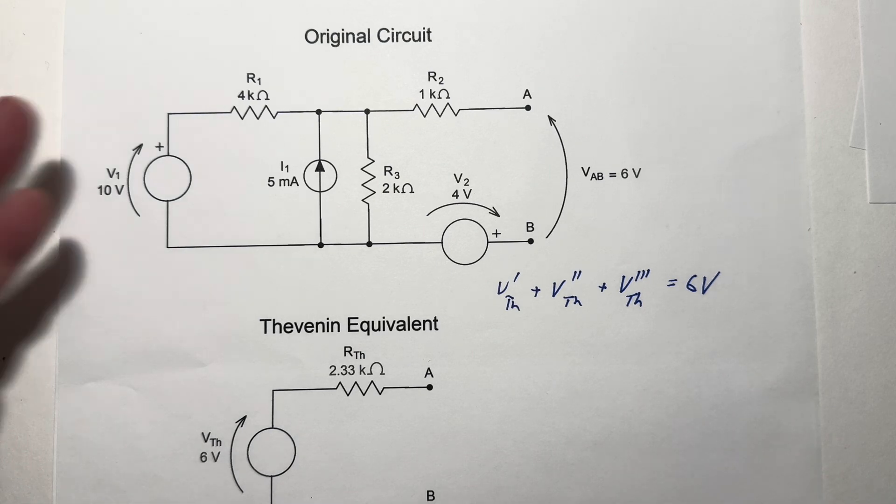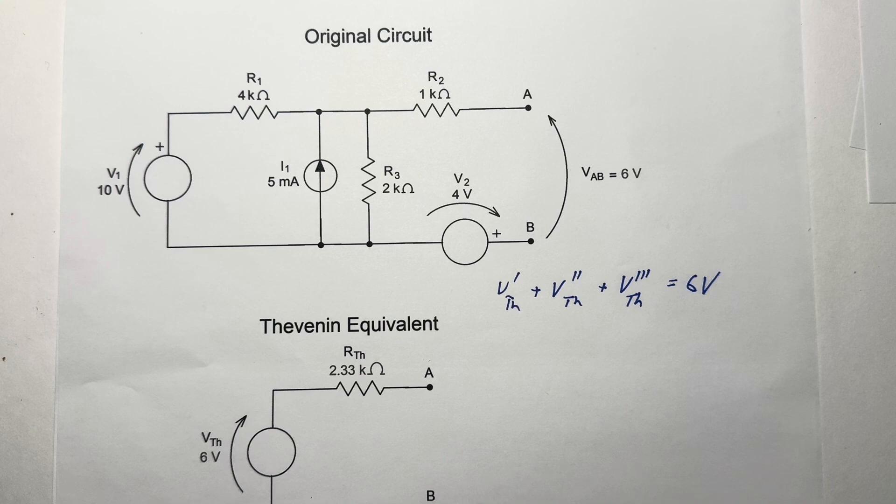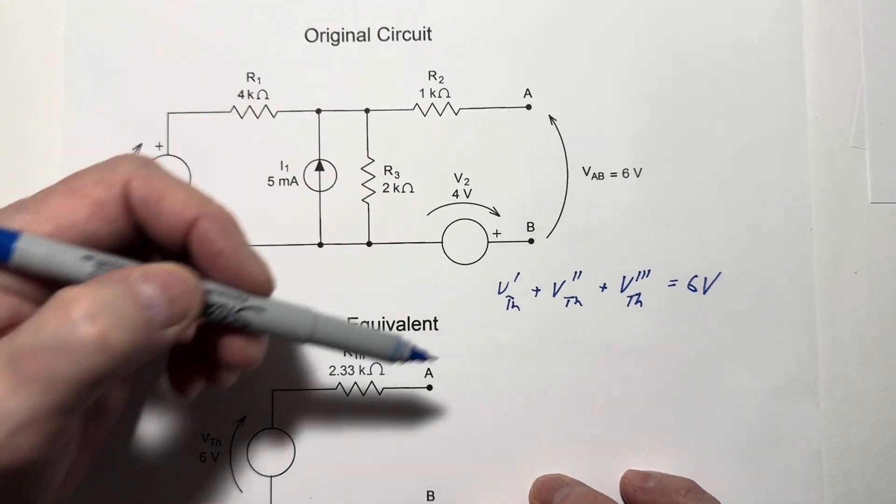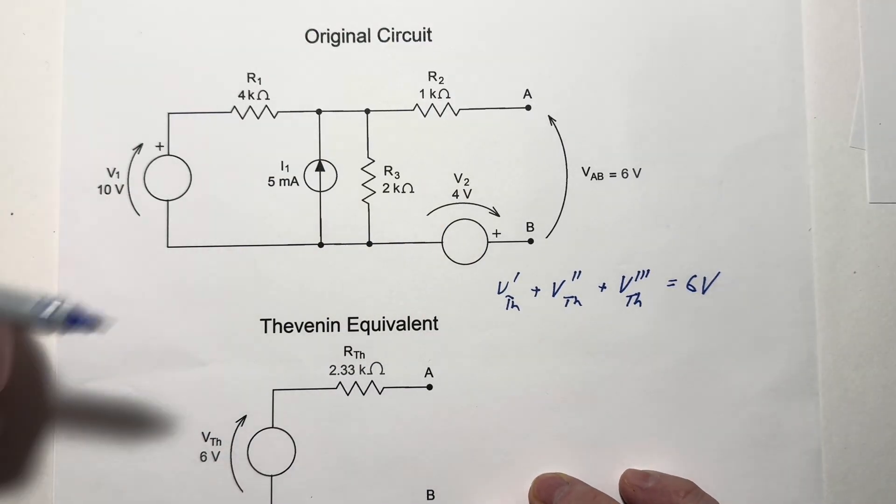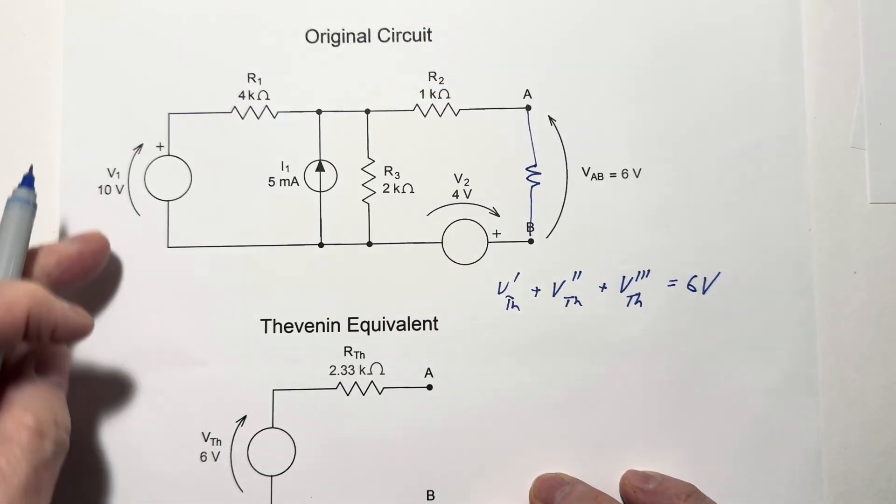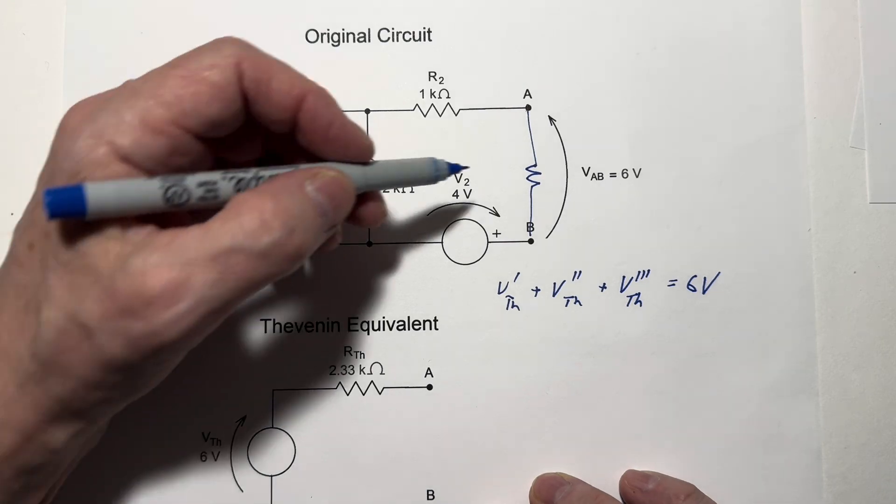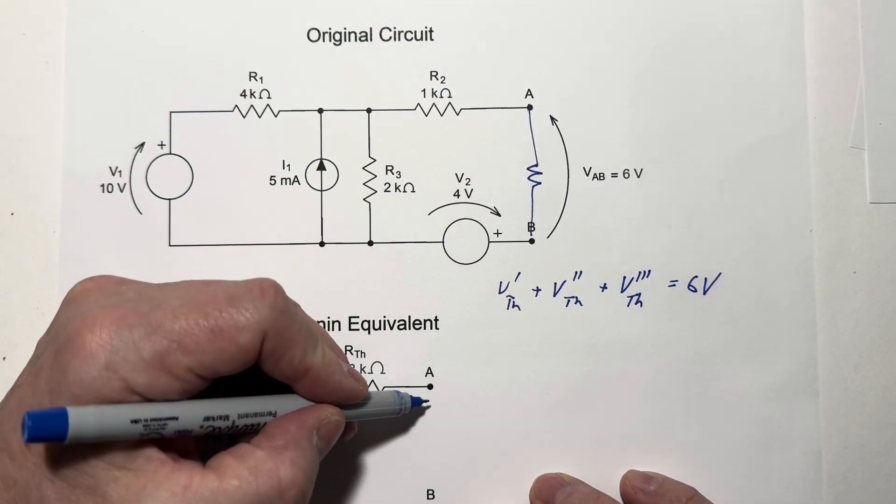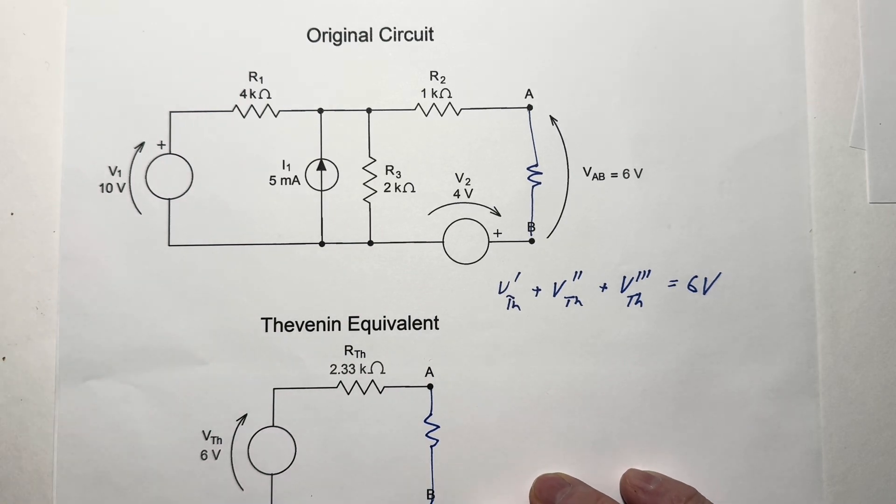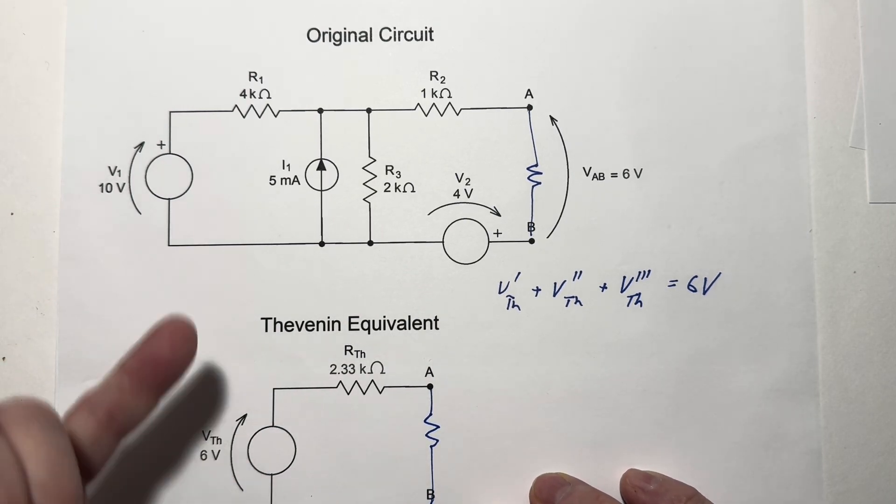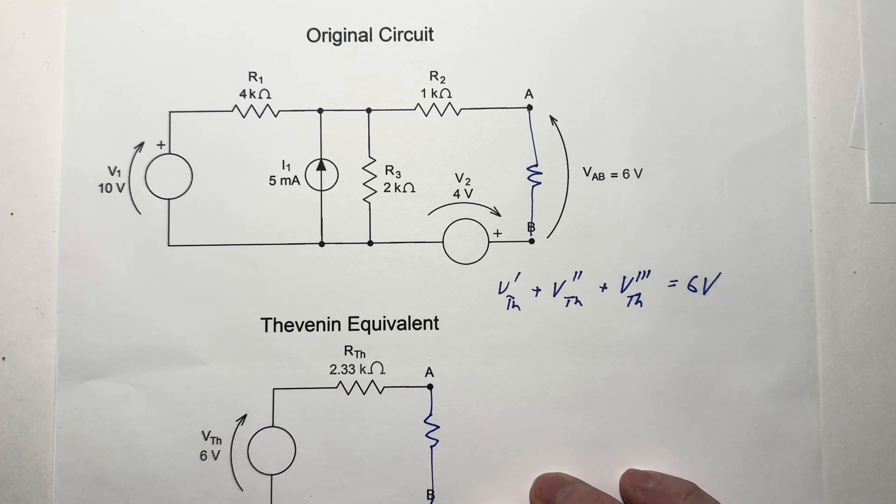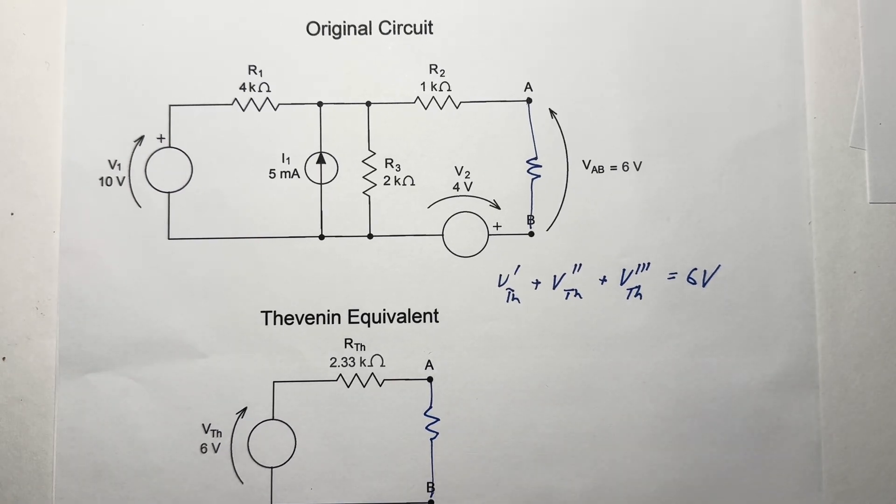Now, why would we want to go to all the trouble of determining a Thevenin equivalent? Well, if we were looking to determine what happens at this port with different values of resistance connected to it, every time we connected a different resistor, we'd have to go through this whole analysis again to figure out what voltage and current we'd get. It's much simpler to use the Thevenin equivalent to do this, and that's one of the reasons we like to use Thevenin's theorem. It can also be used as a circuit reduction technique when we're analyzing circuits that contain transistors and op amps and things like that. So we will look at those applications in later videos.